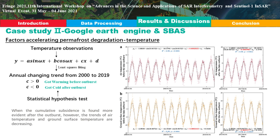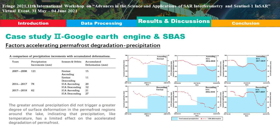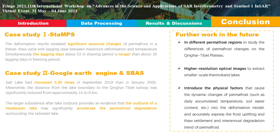Temperature and precipitation are discussed as factors accelerating permafrost degradation. However, the trend of temperature is decreasing, and greater annual precipitation did not trigger a greater degree of surface deformation in the permafrost regions around the lake. This suggests that temperature and precipitation have limited effects on the accelerated degradation of permafrost.